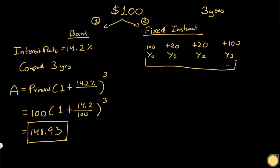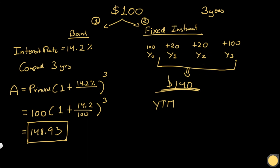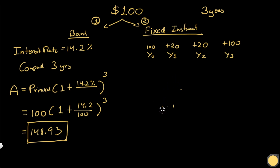Now the question is: what is the yield from option two? The simplest thing would be to sum all the values — twenty plus twenty plus a hundred equals one hundred and forty dollars. But that is not the actual yield, because yield to maturity assumes the investment is held until the end and any coupon amounts received are reinvested at the same interest rate rather than just being pocketed.